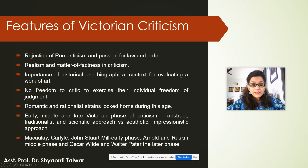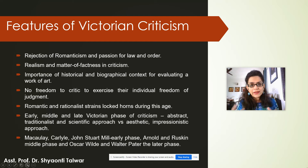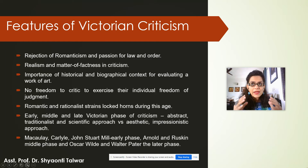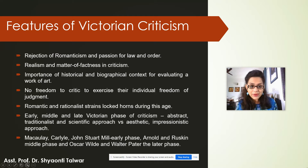Let us now look at the features of Victorian criticism. Victorian criticism aimed at salvaging the society of its times and trying to reconcile the conflict between faith and doubt. It was also a reaction to the previous generation's Romantic age, the Romantic movement, and the whole literary style of the Romantic writers and critics.